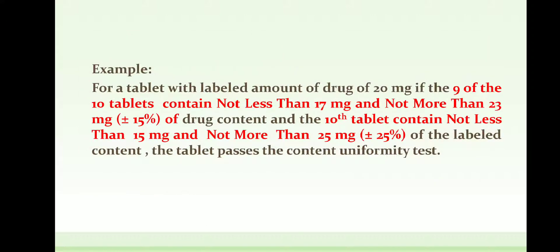For a tablet with a labelled drug amount of 20 mg: if 9 of 10 tablets contain not less than 17 mg and not more than 23 mg (±15%), and the 10th tablet contains not less than 15 mg and not more than 25 mg (±25%), the tablet passes the content uniformity test. If this fails, an additional 20 tablets are analysed, and out of 30 tablets, 27 must be in the range of 17 mg to 23 mg, and the other 3 must be between 15 mg and 25 mg.